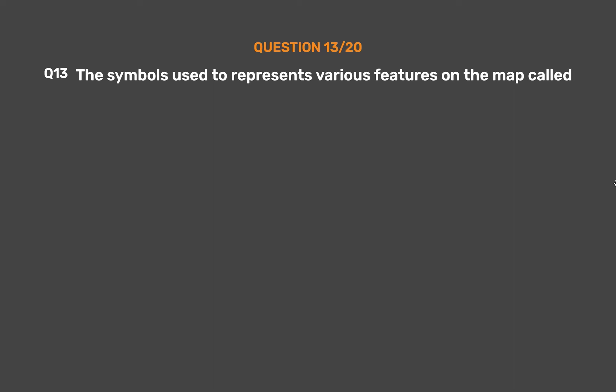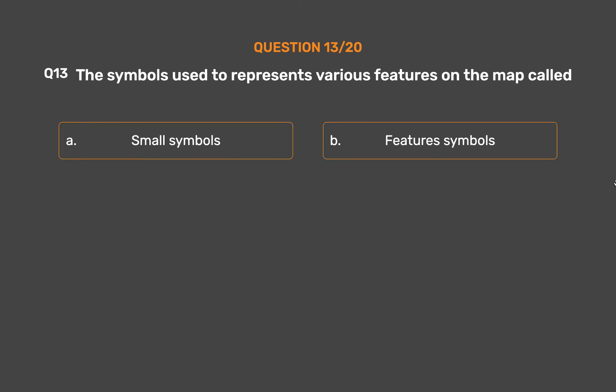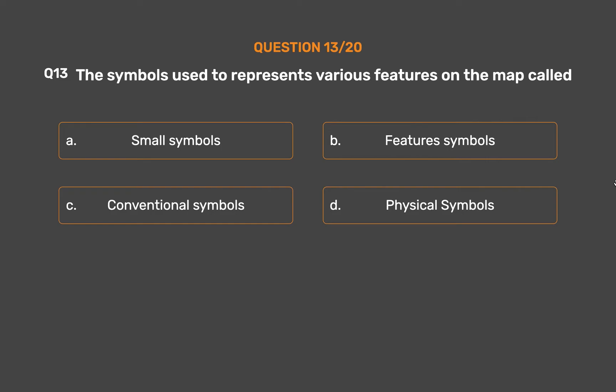Question number 13. The symbols used to represent various features on a map are called — Option A: Small symbols. Option B: Features symbols. Option C: Conventional symbols. Option D: Physical symbols.